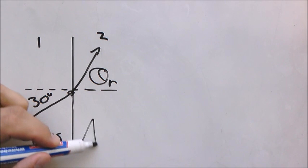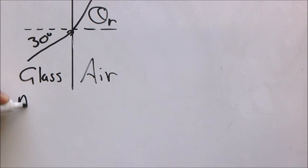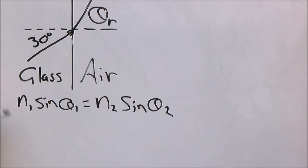So now let's apply Snell's law. N1 sine theta 1 equals N2 sine theta 2. For glass it's 1.52 sine 30 equals 1 sine theta 2.